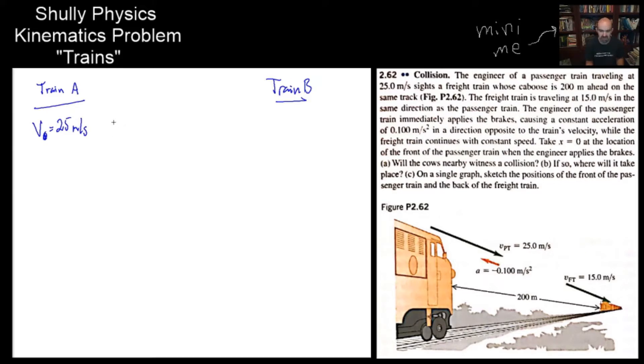It cites a freight train whose caboose is 200 meters ahead on the same track. We already read that X equals zero should be location of the front of the passenger train. So let's say its initial position is zero, where the initial position of train B, the freight train, is 200 meters ahead. The freight train is traveling at 15 meters per second in the same direction as the passenger train.